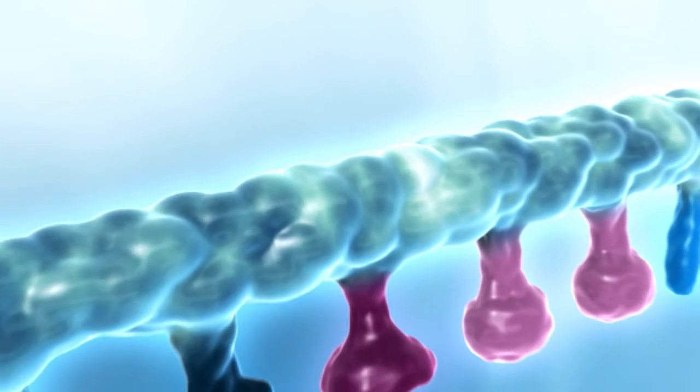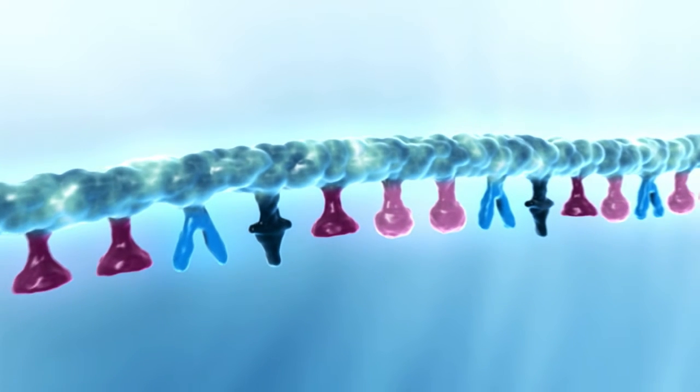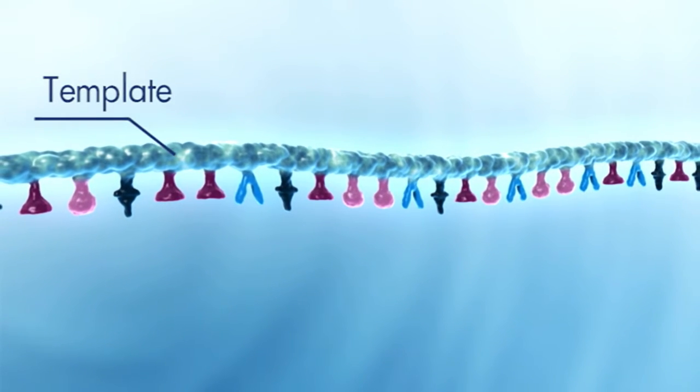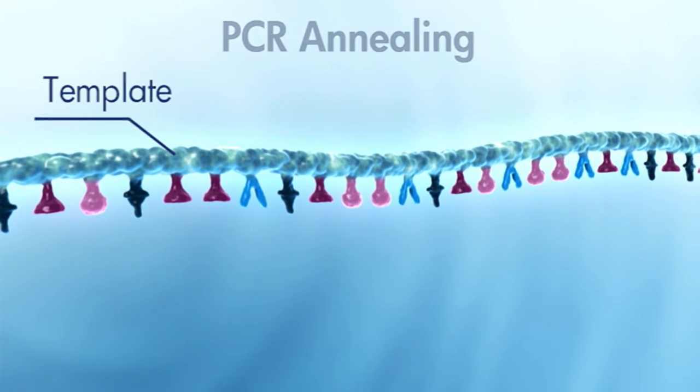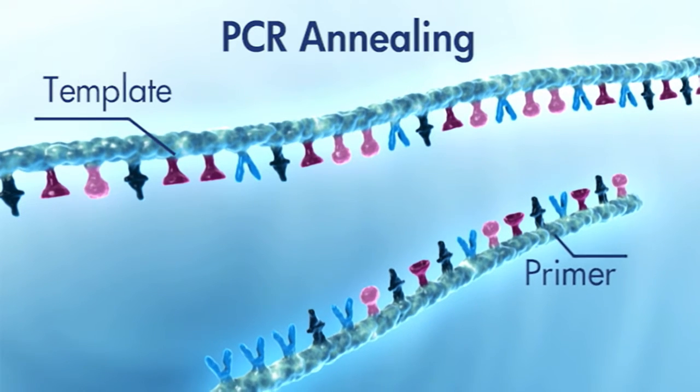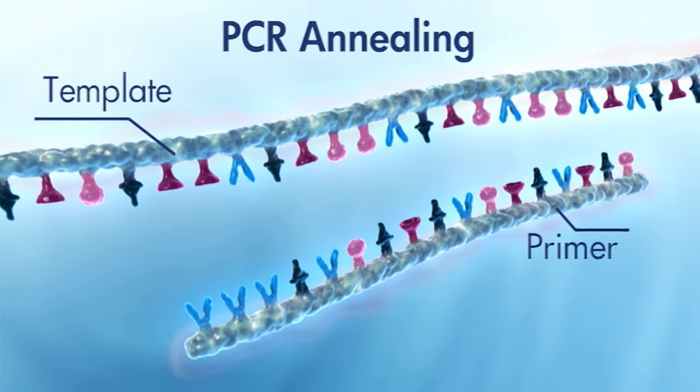At the start of the PCR cycle, increasing temperature leads to the denaturation of the DNA template, causing it to become single-stranded. A temperature decrease allows primers to start annealing to the single-stranded DNA template.